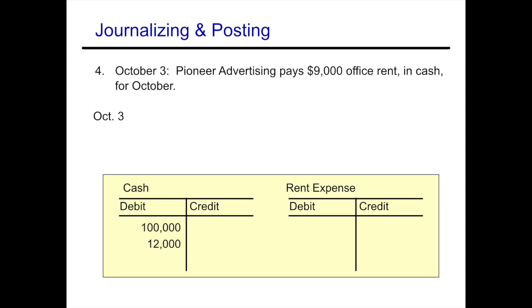On October 3rd, Pioneer Advertising pays $9,000 office rent in cash for October. We're paying cash, so cash is going down — cash gets credited for $9,000. Our rent expense is increasing, so we debit rent expense and credit cash for $9,000. We post that to the ledger. Remember, expense accounts continually increase throughout the year until you close them out at year-end and start a new year.